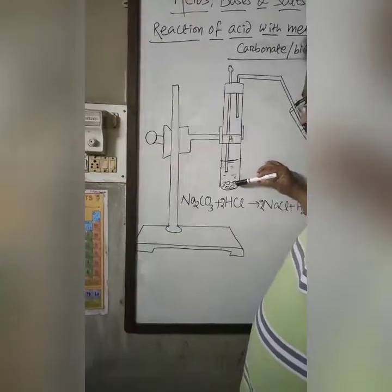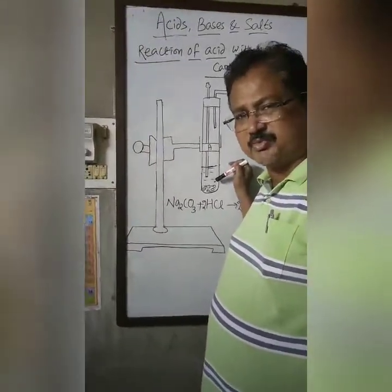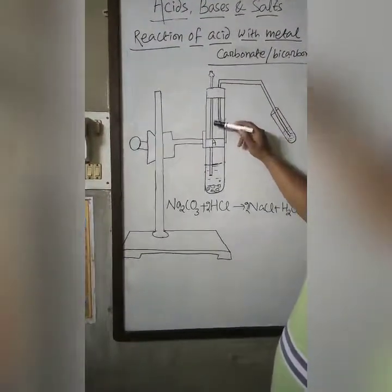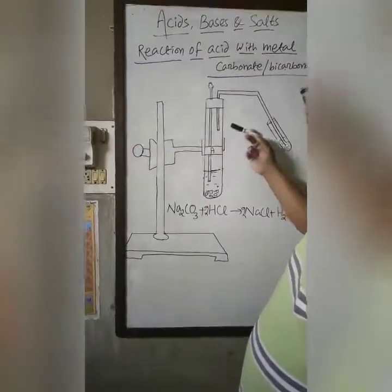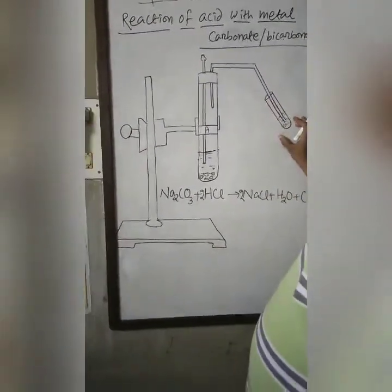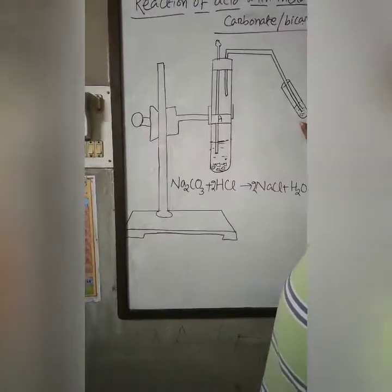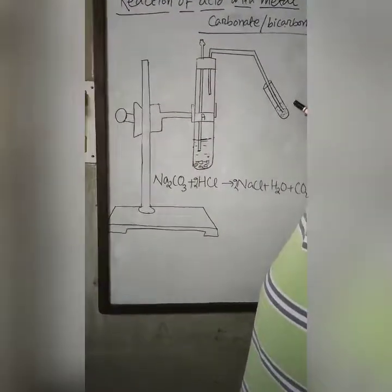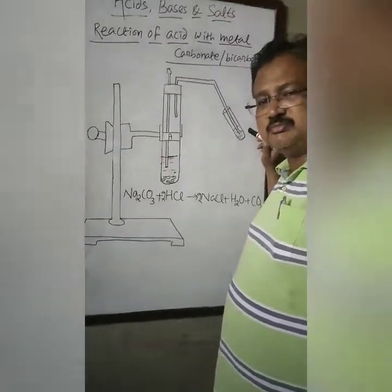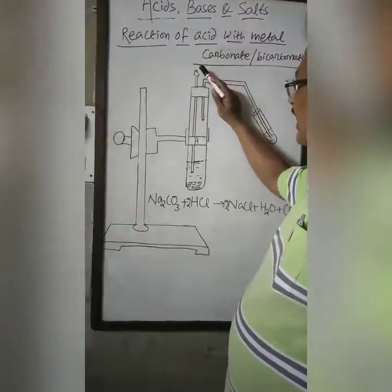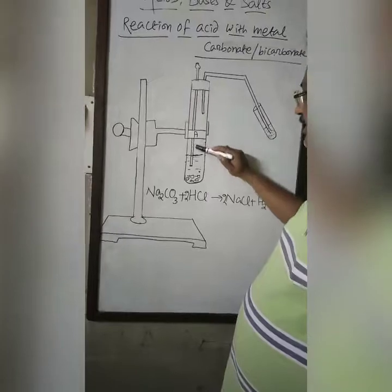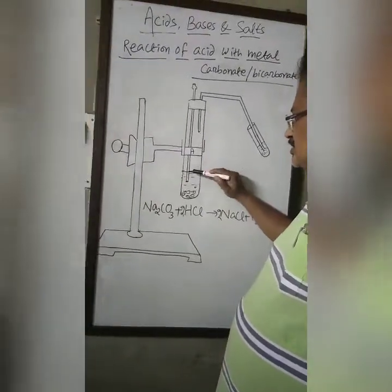Here we have taken some sodium carbonate — sodium bicarbonate can also be taken — and slowly some dilute acid is added to it. This tube has been connected to a test tube containing some fresh lime water. Lime water is a clear solution of calcium hydroxide. The thistle funnel is immersed inside the solution.